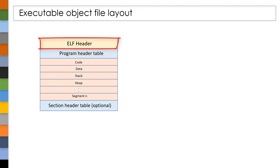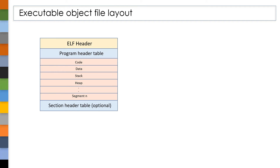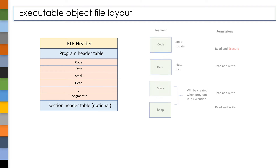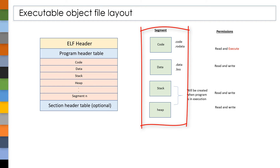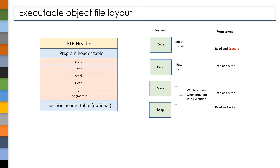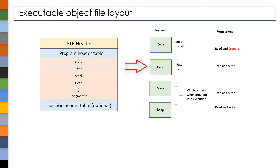We also have an ELF header in an executable object file. And instead of a section header table, we have a program header table. In relocatable object files we have sections, whereas in executable object files we have segments. That is, multiple sections are combined together to form one segment. The code segment is formed by combining the .text and .rodata sections, whereas the data segment is formed by combining the .data and .bss sections.